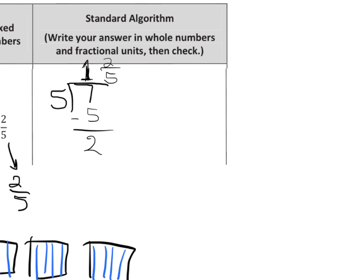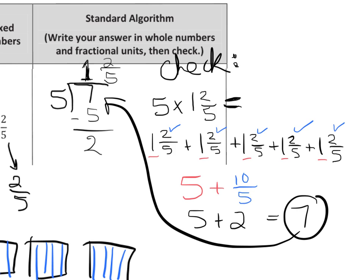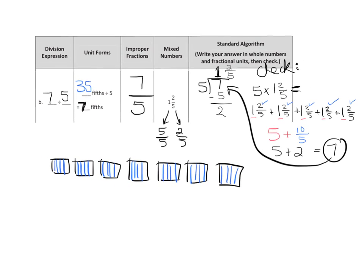Because we haven't learned how to multiply mixed numbers yet, 5 times 1 and 2 fifths means we're going to add 1 and 2 fifths five times. I'll start by adding all the whole numbers: 1, 2, 3, 4, 5 — that equals 5. Then adding the fractions: 2 fifths plus 2 fifths plus 2 fifths plus 2 fifths plus 2 fifths equals 10 fifths, which equals 2. So 5 plus 2 equals 7, and that's exactly what it's supposed to equal.